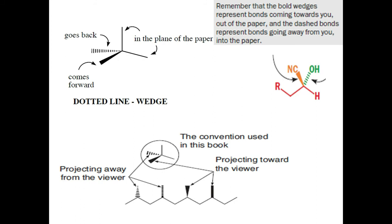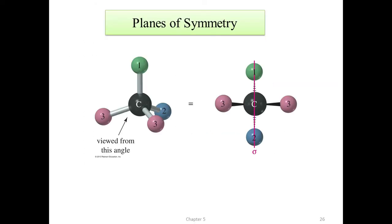In structural representation, wedge-dash notation is used: a dashed line represents a bond projecting away from the viewer (behind the plane of the paper), and a wedged line represents a bond projecting toward the viewer. This convention is used to depict the three-dimensional arrangement around a chiral center.